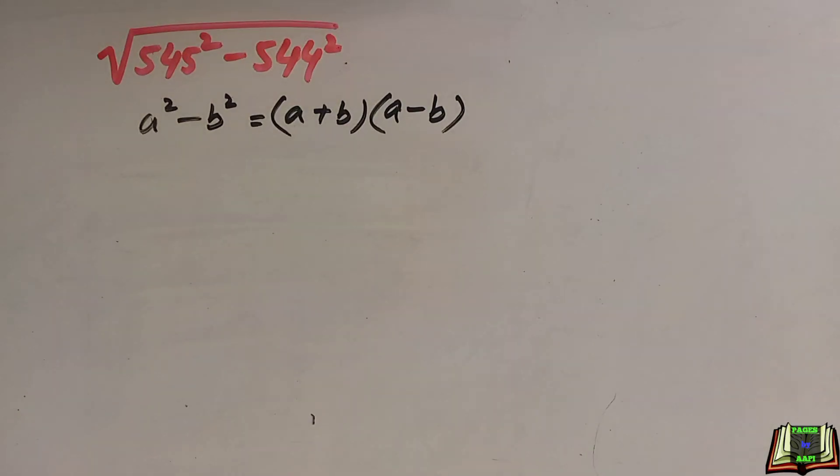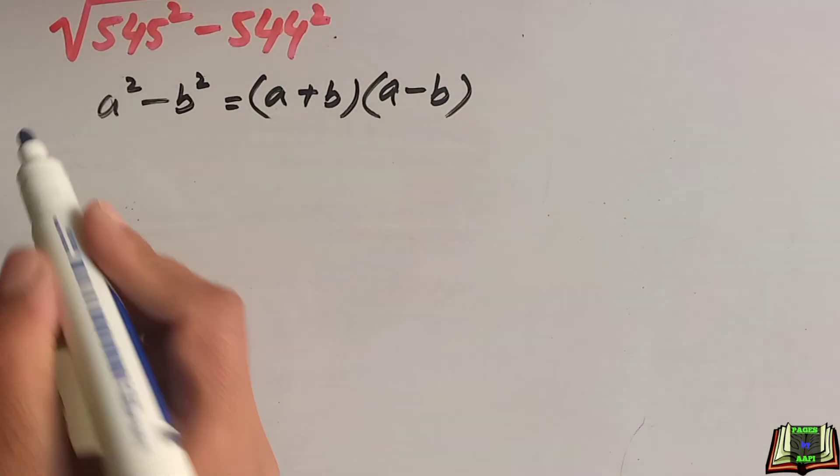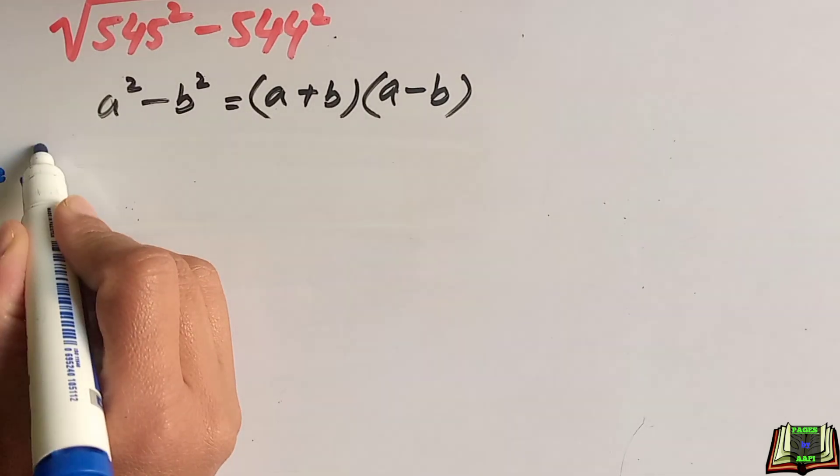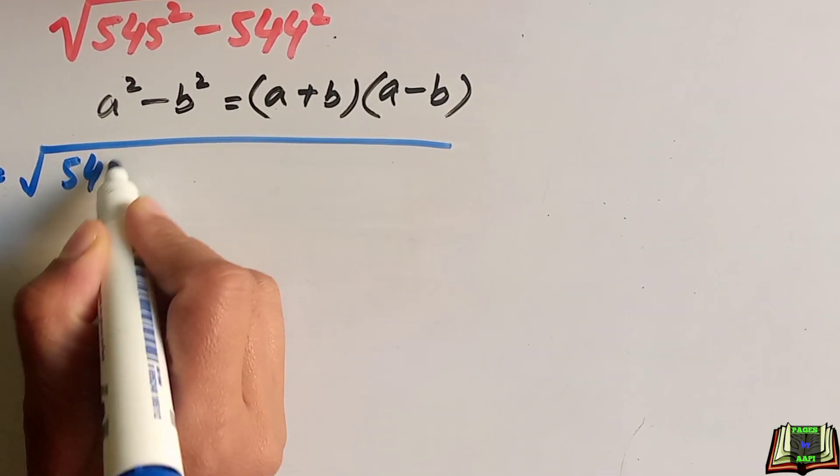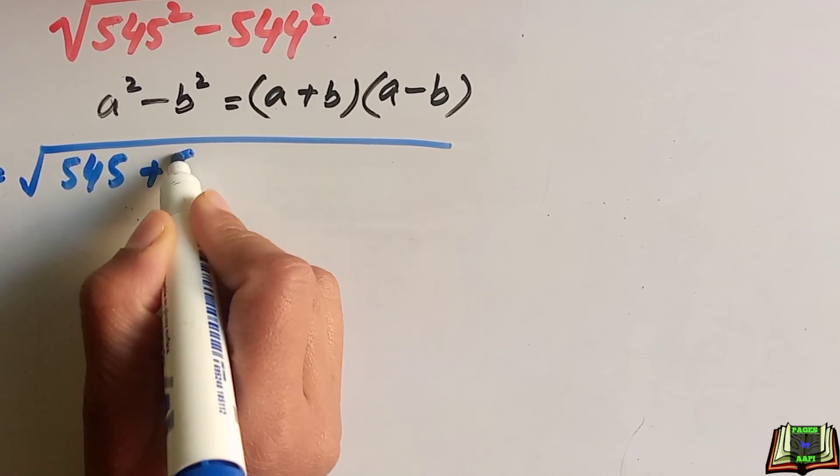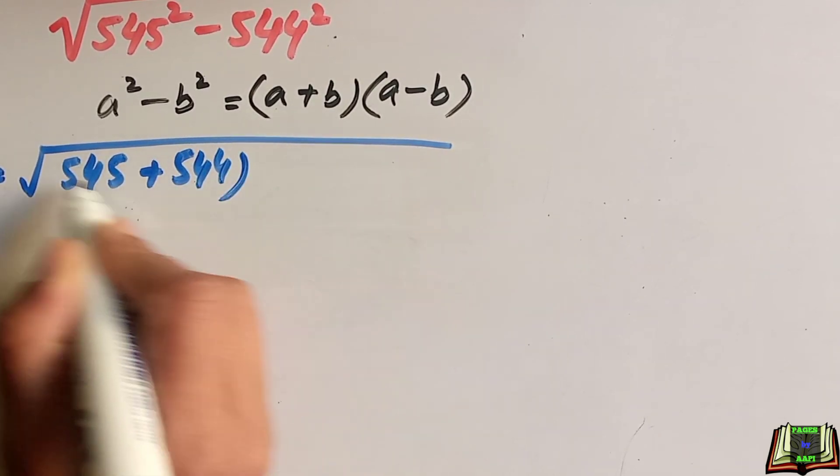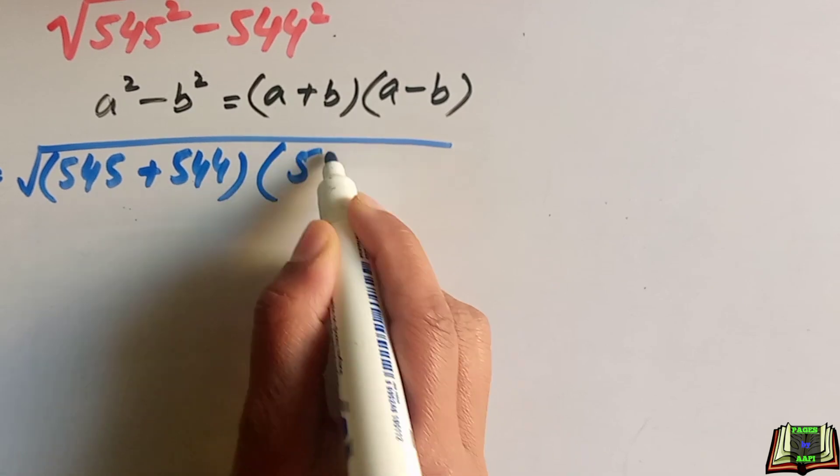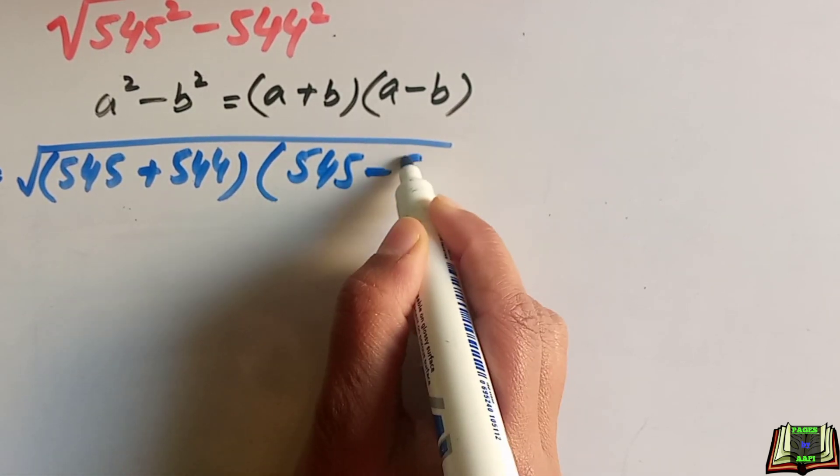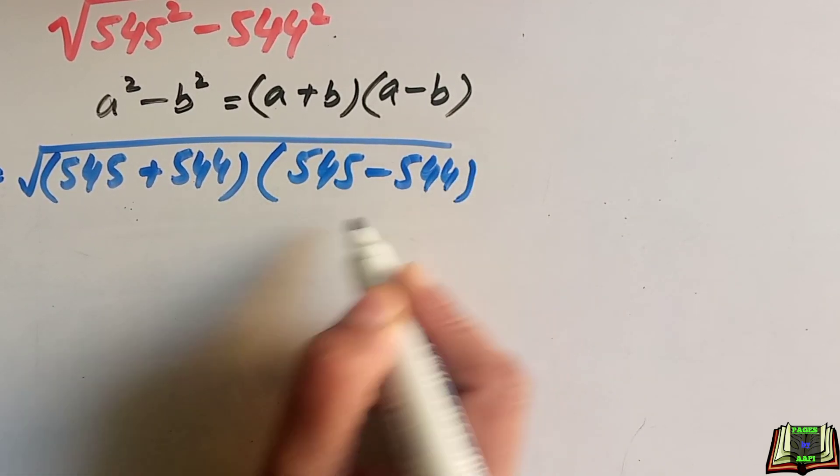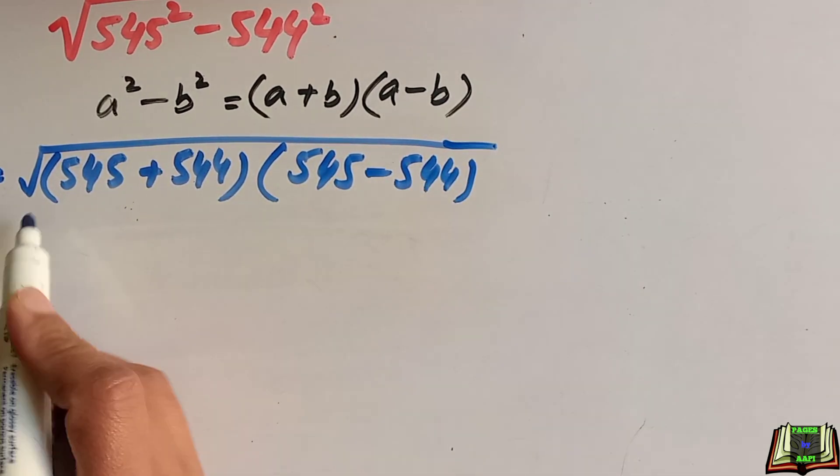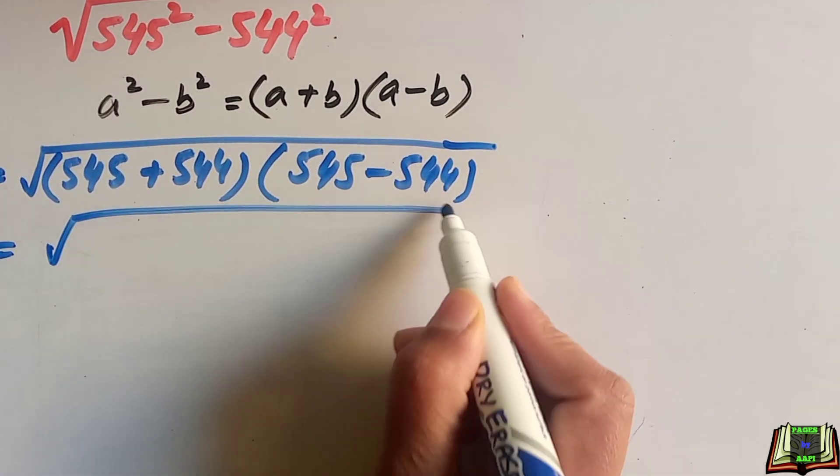Let's write 545 square minus 544 square in the form of a plus b times a minus b. So this will be equal to 545 plus 544 times 545 minus 544.